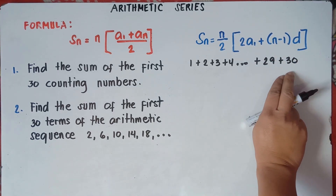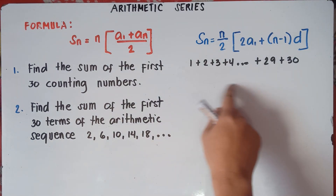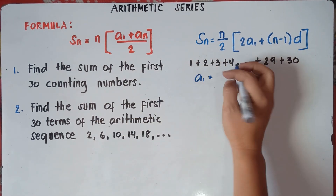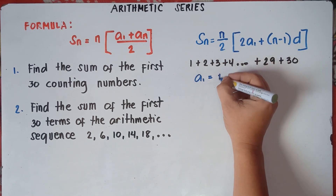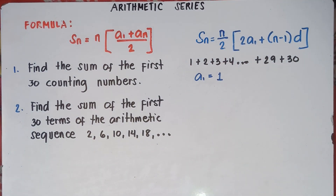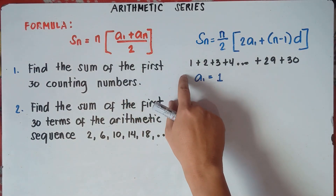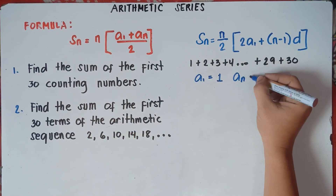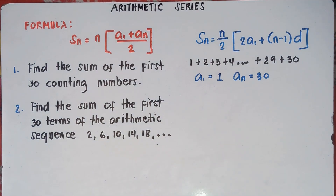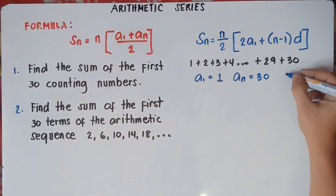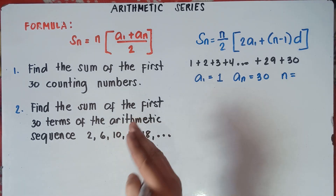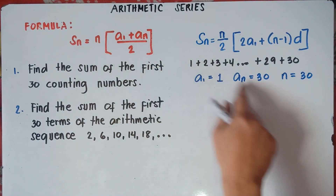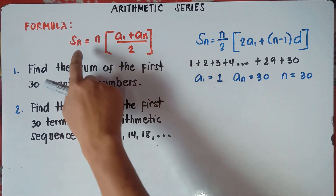Alright, so our last number is 30. Let's check what our given values are. Do we have the first term? Yes — our first term is number 1. Do we have our last term? Yes, we do, because we are told to find the sum of the first 30 counting numbers, so our last term, A sub N, will be 30. Do we have N? N is the number of terms. Since we are looking for the first 30 counting numbers, we have 30 terms, so N is 30. Since we have the first term, the last term, and N, we can use the first formula.